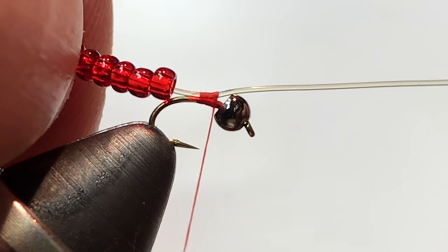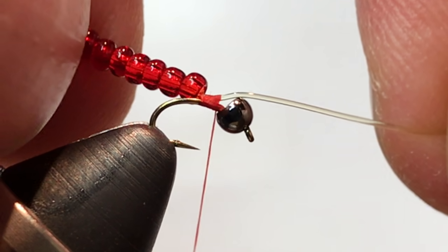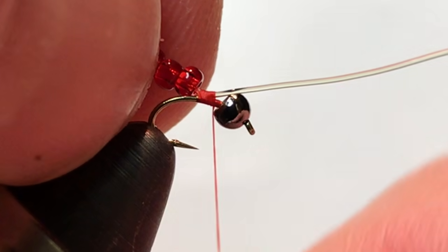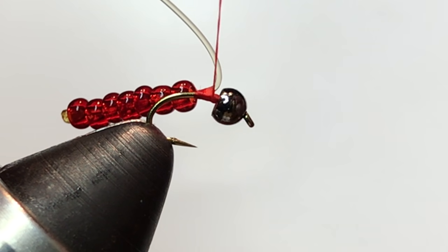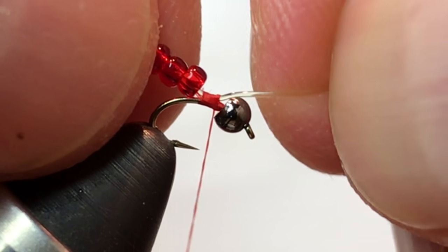Now cinch up on the monofilament to pull the beads tight to the back of the thread. At this point take a few more tight wraps on top, a few underneath, one more on top. Cinch up as much as you can.